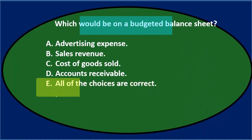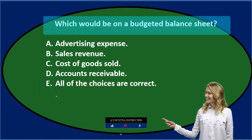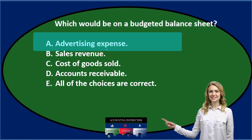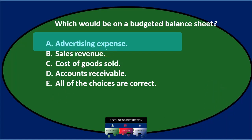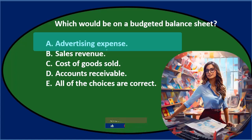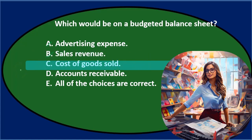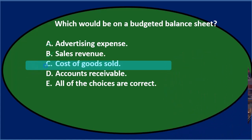Let's go through this using the process of elimination: which would be on a budgeted balance sheet? A. Advertising expense — the fact that it says expense would typically mean it would be on the income statement. Note that although we're talking about a budgeted balance sheet, most of the rules generally apply: budgeted income and expenses on an income statement, budgeted assets, liabilities, and equity on the balance sheet. So advertising expense probably wouldn't be on the balance sheet. B. Sales revenue — once again, that's an income statement item, not a balance sheet item. C. Cost of goods sold — that too is an income statement item, not a balance sheet item.